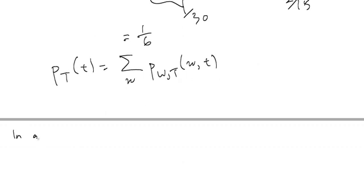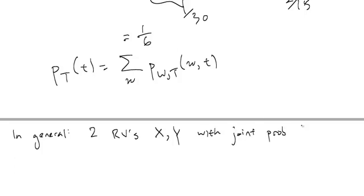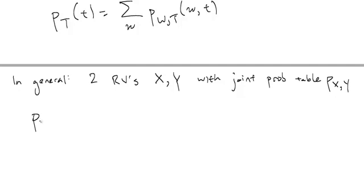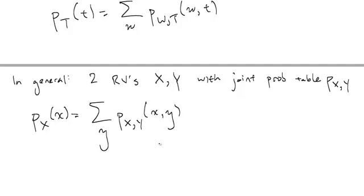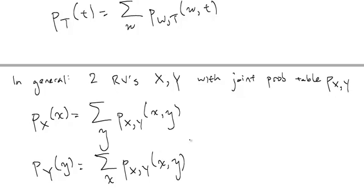In general, when we have two random variables X and Y with joint probability table P_{X,Y}, the probability that X equals little x is equal to the sum over little y of P_{X,Y} evaluated at little x, little y. And similarly, the probability that Y equals little y is equal to the sum over little x of P_{X,Y} of little x, little y.